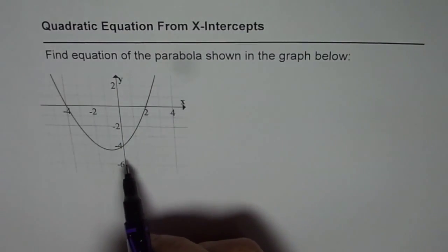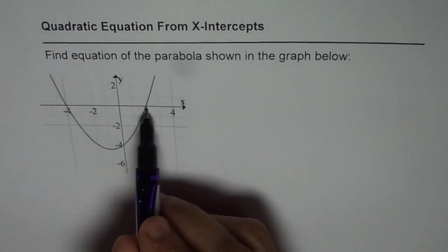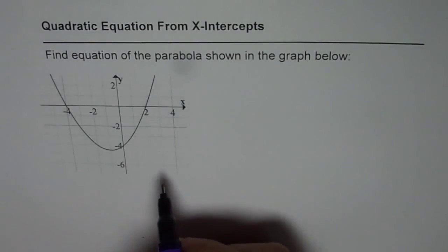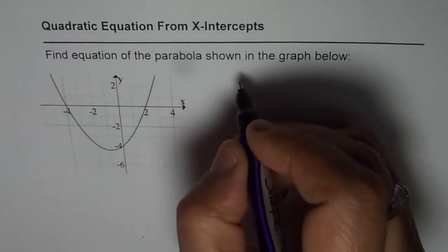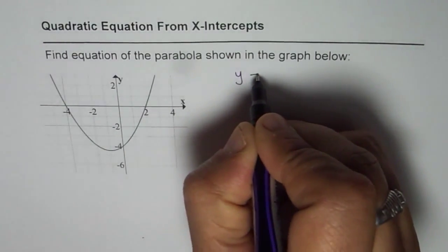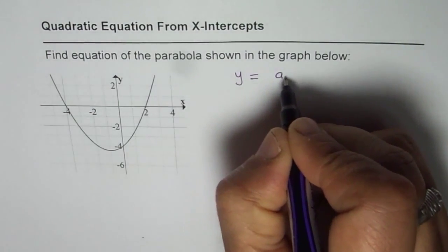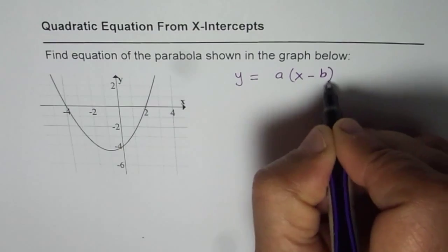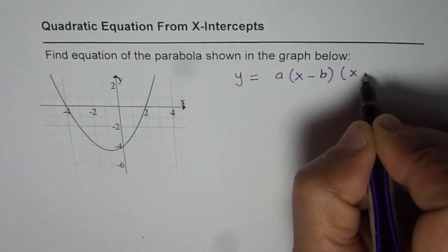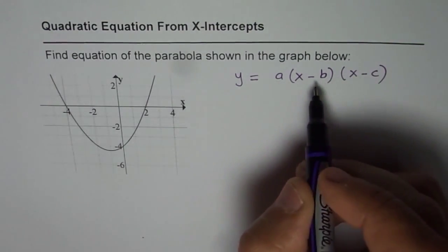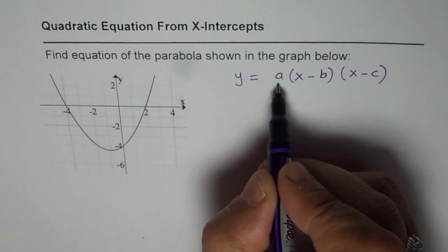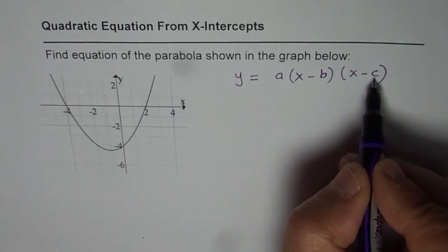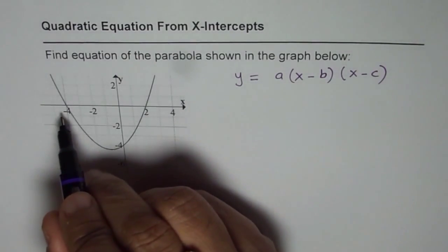So this time we have a parabola which has two x-intercepts. Now to find the equation from the x-intercepts, the general equation is y equals a times x minus b times x minus c, where a is a stretch or compression factor, and b and c are the x-intercepts.